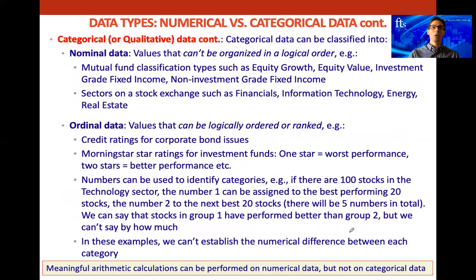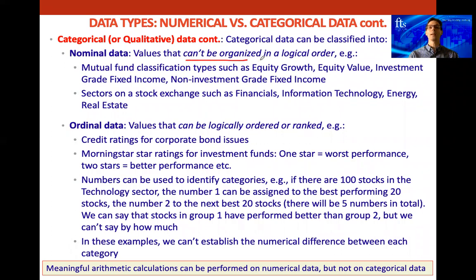Categorical data can be classified into nominal data or ordinal data. With nominal data, the values can't be organized in a logical order. For example, in the mutual fund space — also called unit trusts — many investors pool money together and the funds are managed by a professional investment manager. We get different types of classifications for these, like equity growth or equity value funds.